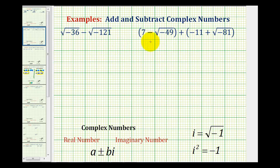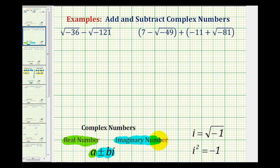We want to add and subtract these expressions using complex numbers, but the first thing we need to do is simplify these using complex numbers. A complex number must be in the form of a plus or minus bi, where a is a real number and plus or minus bi is an imaginary number, where i is equal to the square root of negative 1.